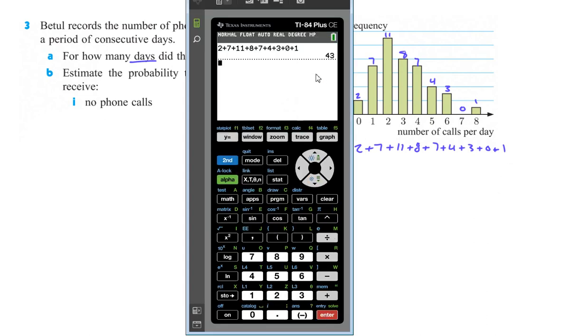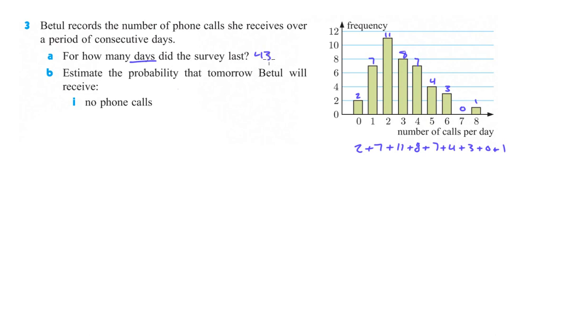So 2 plus 7 plus 11 plus 8 plus 7 plus 4 plus 3 plus 0 plus 1. We'll add those all up and see what we get. Okay, so we add those all up and we get 43 days.